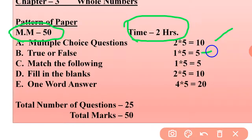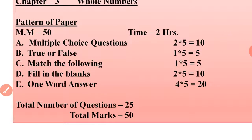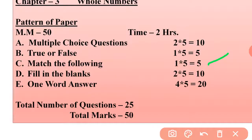In Part B, True/False — total five questions, each carrying one mark. In Part C, Match the Following — also five questions, each carrying one mark, so five marks total. In Part D, Fill in the Blanks — each question carries two marks, so total 10 marks.